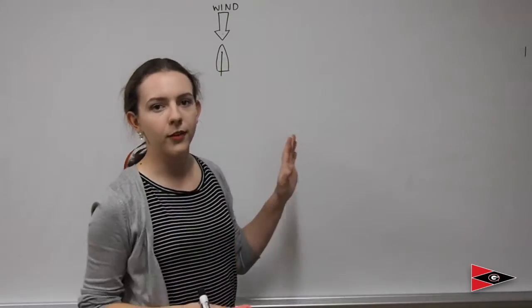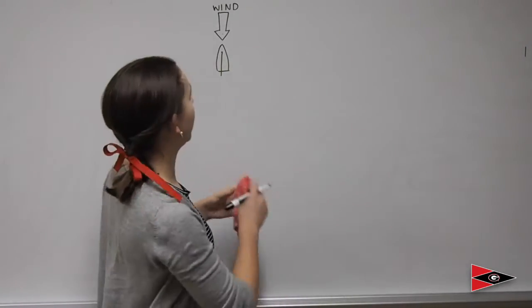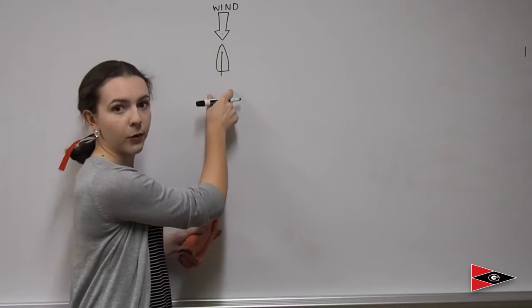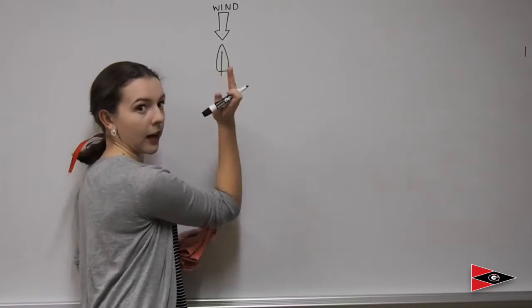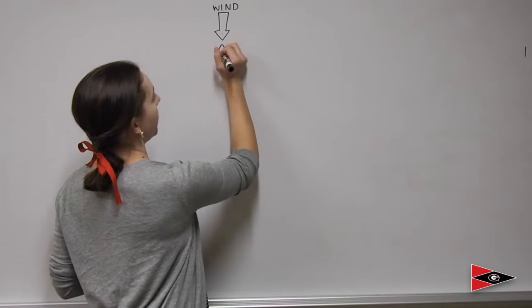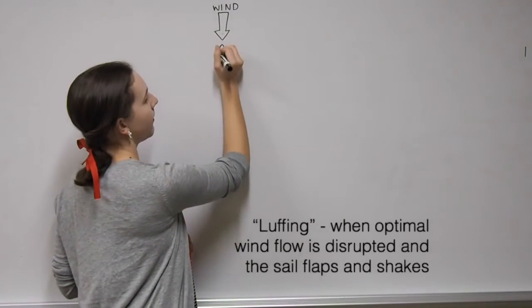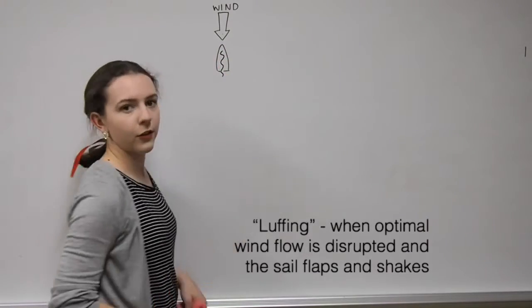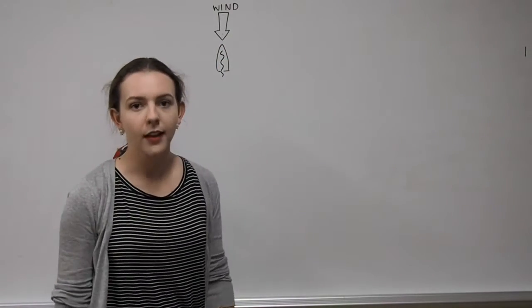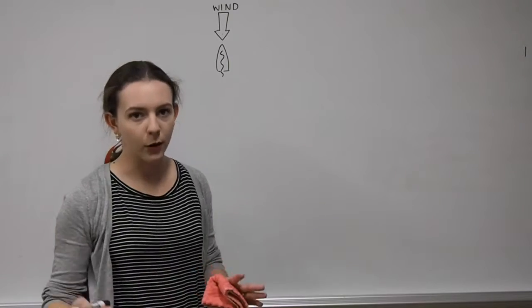When our boat is facing dead into the wind, we have wind coming on both sides of the sail here. Imagine the sail is sticking up at you. So when the wind is blowing equally on either side, we get what's called luffing. Your sail is just flapping right there and you're not moving. This is called in-irons, no-go zone.